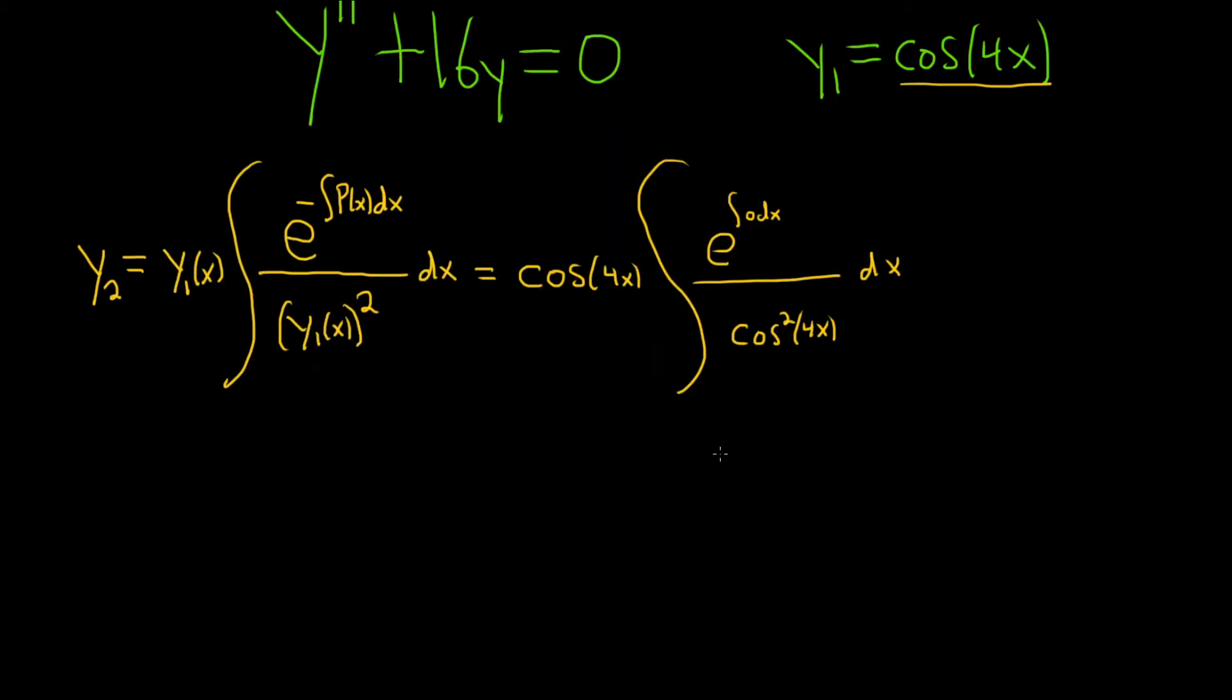All right, good stuff. So this is equal to the cosine of 4x. Now, normally when we integrate this stuff, we ignore the constant. So like if you integrate 0, you're just going to get a constant. So it'll be e to a constant, which is just a constant.